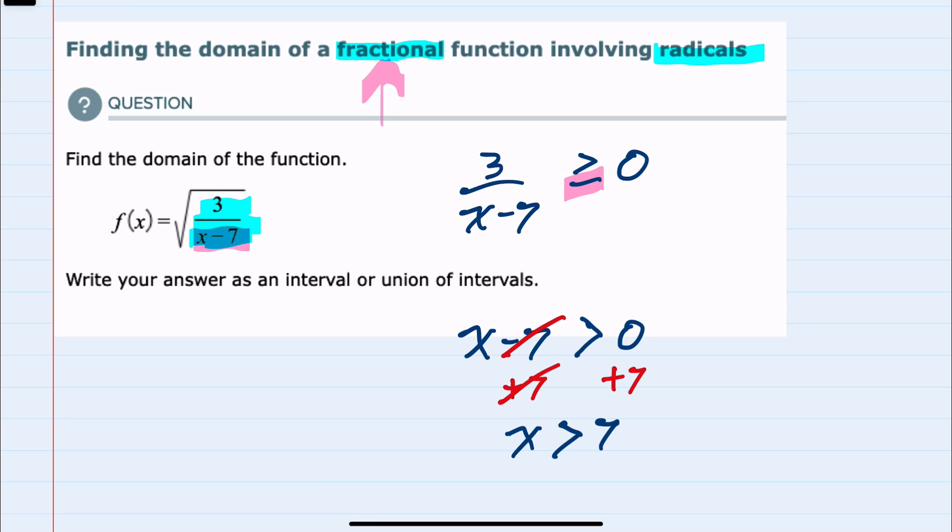And since we're asked for interval notation, the lowest value we have is 7, and we use the curve bracket because we're not including 7.